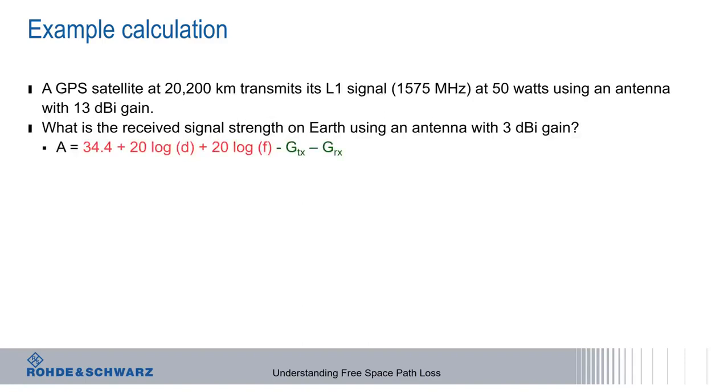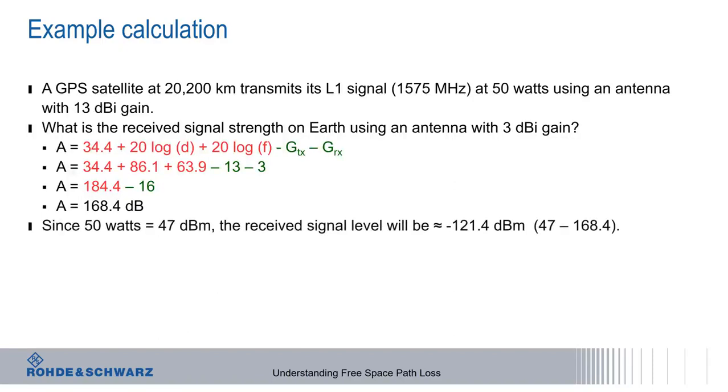We'll start with our decibel version of the free space path loss equation, and after substituting values for distance, frequency, and antenna gain, we end up with a path loss or attenuation of 168.4 dB. Since our transmit power of 50 watts is 47 dBm, this means that our receive level will be approximately minus 121.4 dBm.